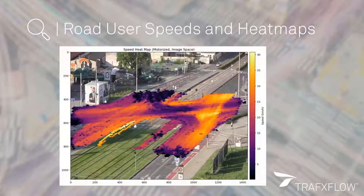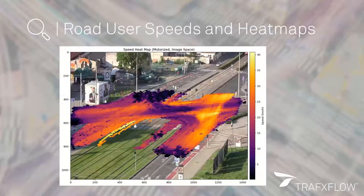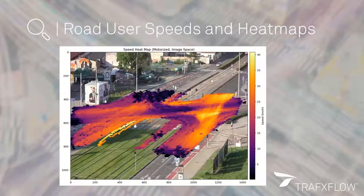Here is an example of a speed heat map from the camera view, which shows in which location of the junction you have higher speeds predominantly, and where are the locations where you have lower speeds. This image can already tell you some locations or conflict zones where you have big speed differences between higher speed and lower speed movements.